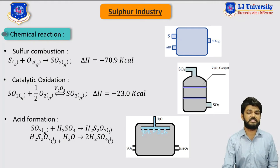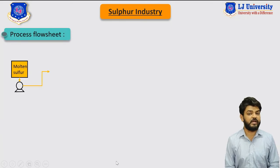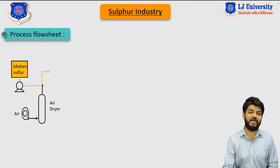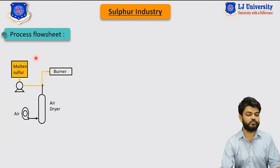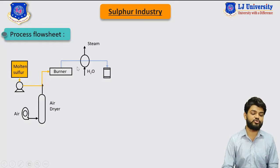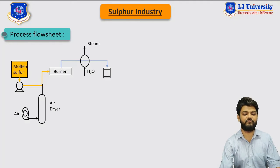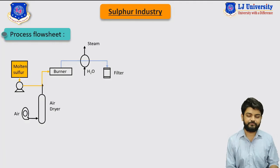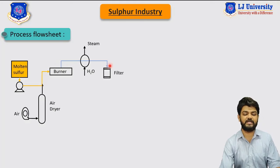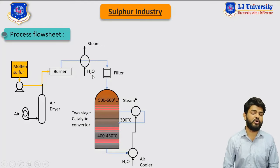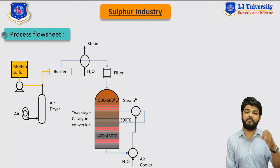In the flow sheet for sulfuric acid production, molten sulfur is mixed with dry air and fed to the burner to produce SO2 gas in the furnace. The SO2 gas is then passed through a filter to remove oils associated with the gas. The heat from this exothermic reaction is utilized to produce steam from water. This SO2 gas is then directly sent to the double-stage catalytic reactor.